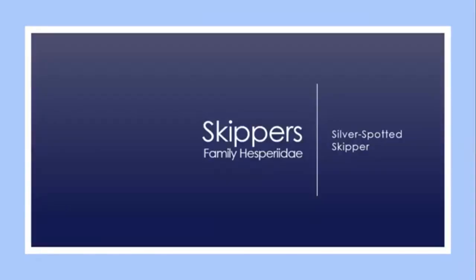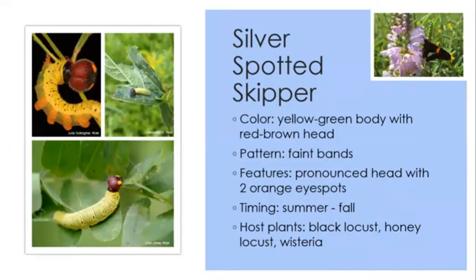The last group of butterfly caterpillars is the skippers, so named because of their rapid skipping flight pattern. They're not considered true butterflies but are more closely related to butterflies than to moths. There are over 250 species of skippers. The silver-spotted skipper is one of the easiest adults to identify, and its caterpillar is unique as well — a yellow to green body with a very pronounced red-brown head, faint bands along the body, and two orange eye spots on the head. Summer through fall, you can find it feeding on black and honey locust as well as wisteria.